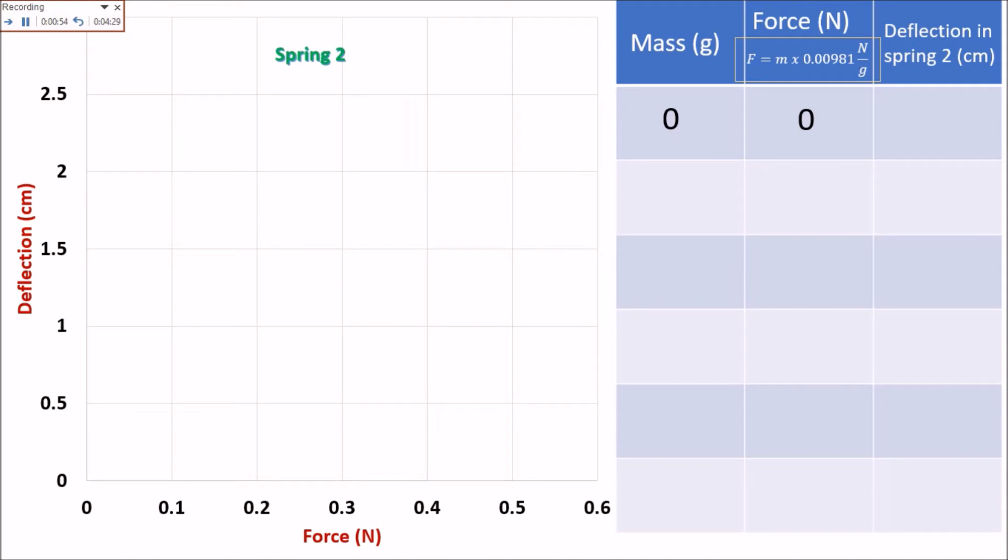So we will start with zero. Then we will plot the point zero. For 10 grams, the force is 0.0981 newton, and the deflection in Spring No. 2 is 0.5 centimeter.